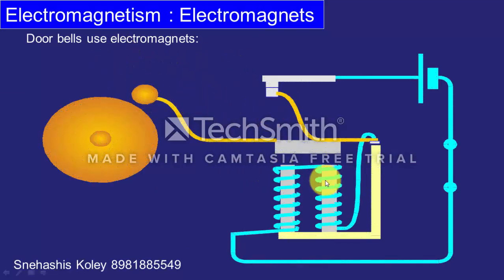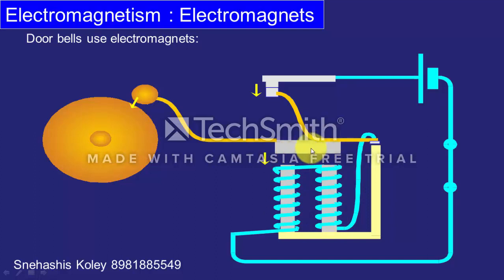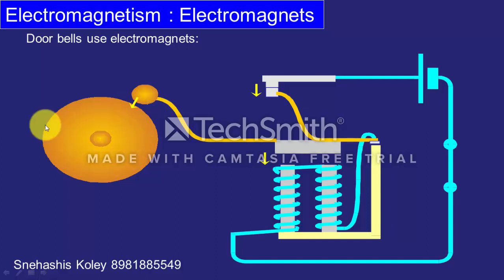Here is a diagram showing how an electric doorbell works. When the switch is connected, current flows through the conductor and the bars become magnets, attracting the iron bar. Due to this attraction, the iron bar moves towards the electromagnet and the hammer hits the bell.